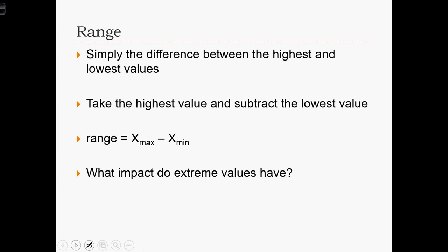The simplest way to define dispersion is with the range of the data set. Range is simply the difference between the highest and lowest values. So we take the highest value, xmax, and we'll subtract from that the lowest value in the data set, xmin.